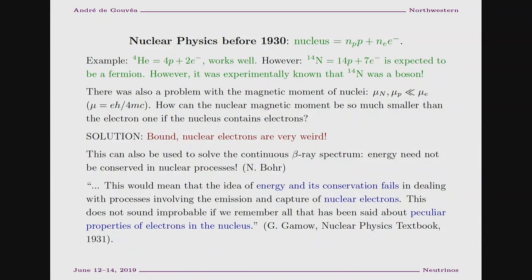By the 1930s, people were starting to take a serious stab at building a model for nuclei. By the 1920s they had a model that worked very well for many things, but also had some big problems. People figured out they could measure the masses of nuclei — hydrogen, helium, beryllium, lithium, etc. — and the masses were almost in integer units of the proton mass.